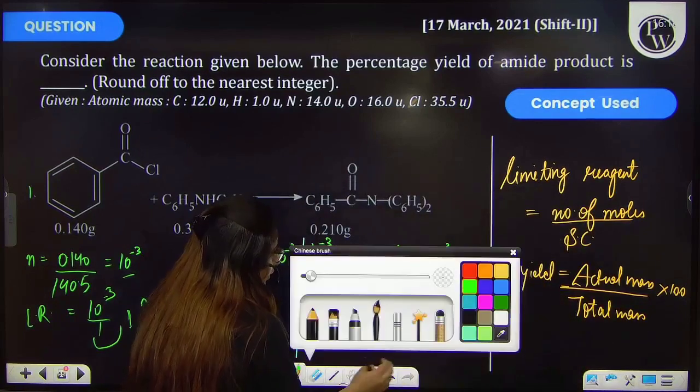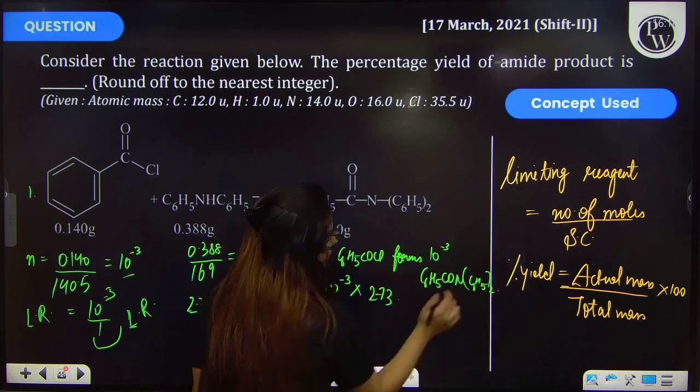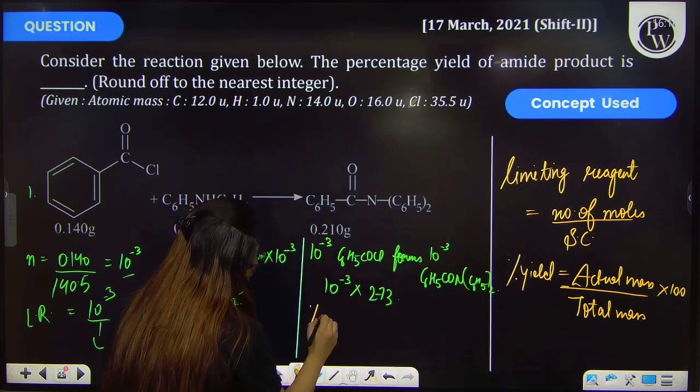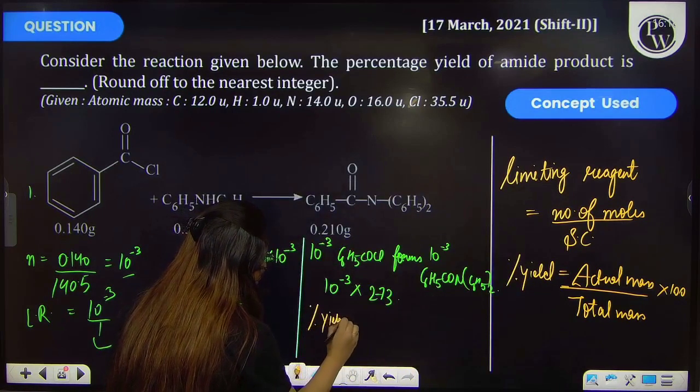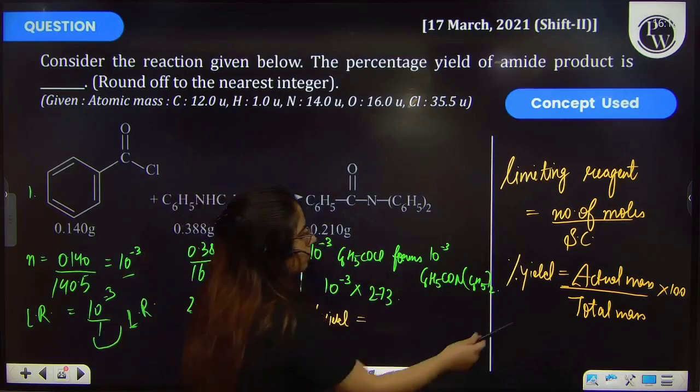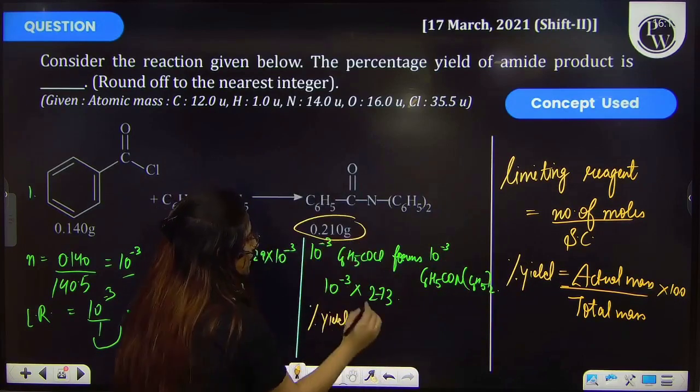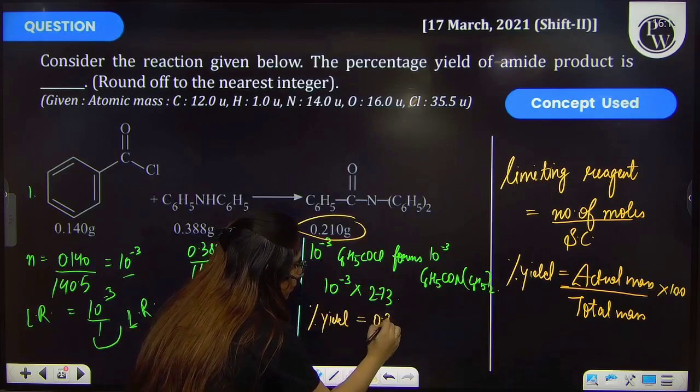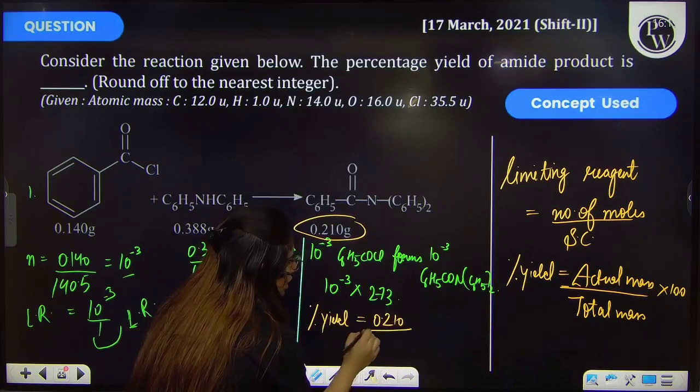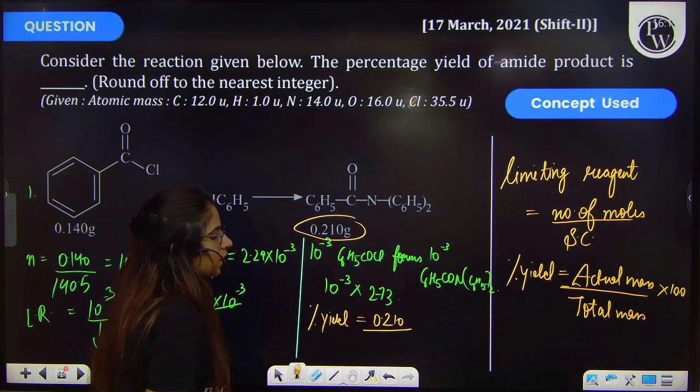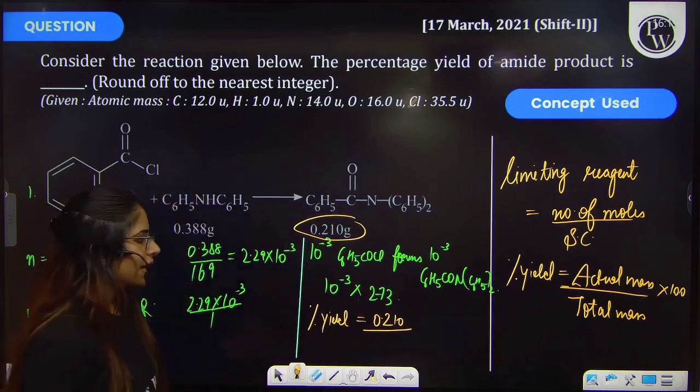So percentage yield will be equal to the actual mass. So the actual mass is 0.210 gram and then the mass that we have calculated.